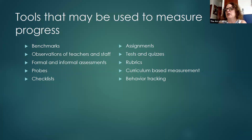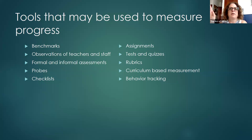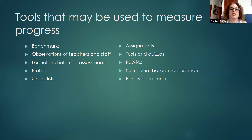Curriculum-based measurement tools based on the specific curriculum being used — such as Wilson's reading program — may have certain measurements built in that can be used to aid in progress monitoring. Another tool is behavior tracking, such as an ABC chart or data tracking chart, if the student has goals in areas of behavior, emotional regulation, or similar.